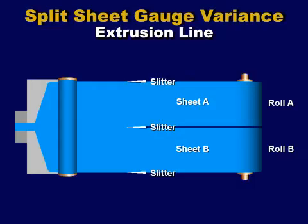In this extrusion line, wide sheet was extruded and split into two equal widths. It was then wound on separate rolls, A and B.